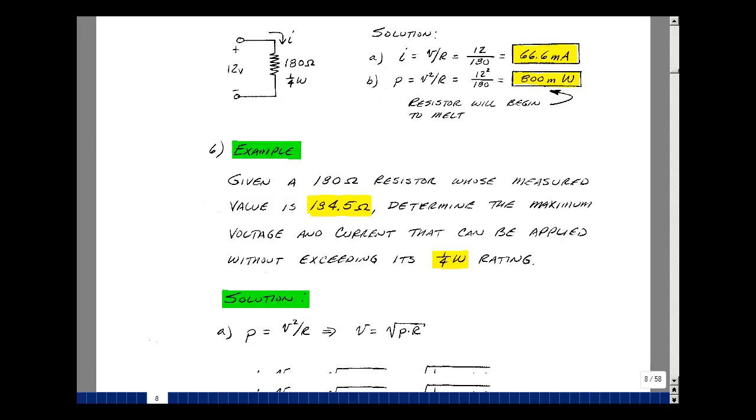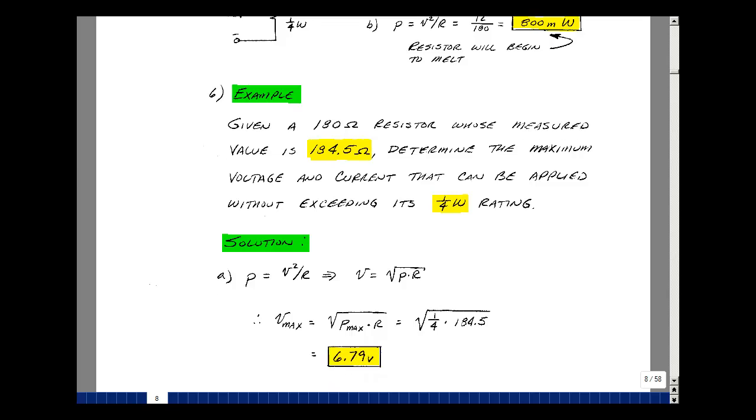Let's do another example. Suppose I have that same 180 ohm resistor, and I measure it, and it turns out to be 184.5. What's the maximum voltage and current that I can apply to this without exceeding the quarter-watt rating? Well, what is power? Power is V squared over R.